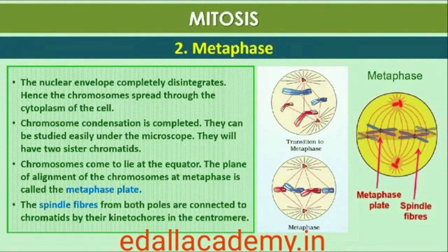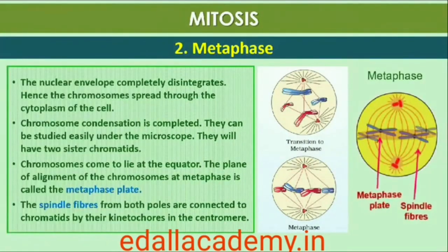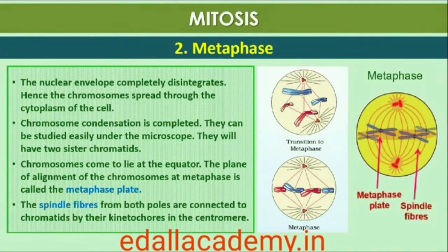Metaphase is characterized by all the chromosomes coming to lie at the equator, with one chromatid of each chromosome connected by its kinetochore to spindle fibers from one pole and its sister chromatid connected by its kinetochore to spindle fibers from the opposite pole. The plane of alignment of the chromosomes at metaphase is referred to as the metaphase plate.